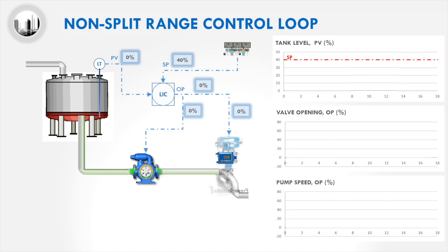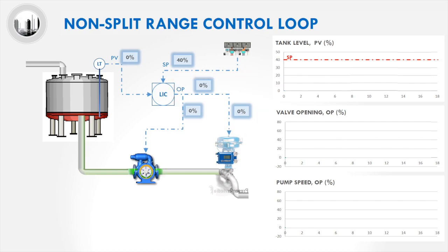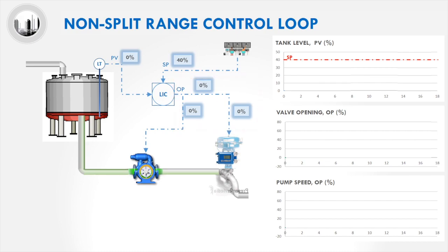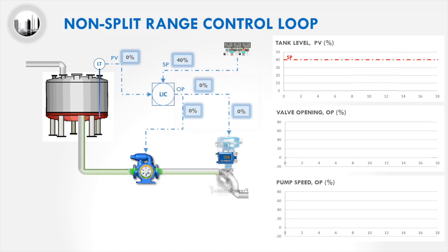Let us first understand the difference between a split range control and normal closed loop control. This diagram demonstrates a normal closed loop control without split range control. The output of the controller will send the same output to both the control valve and pump. Since the level in the tank is below the controller's set point, the output is zero.